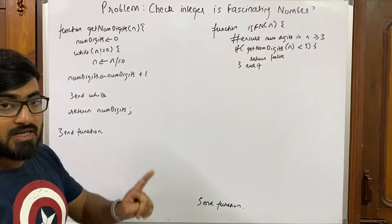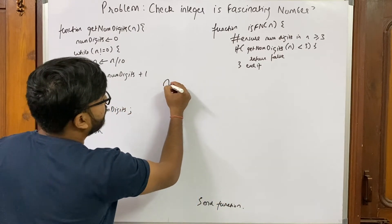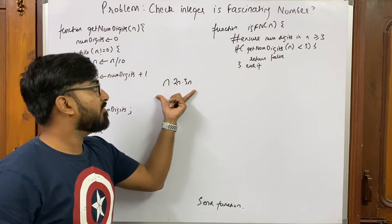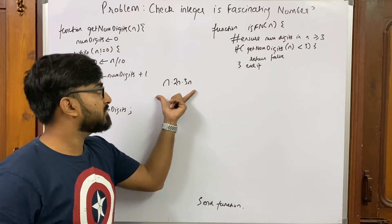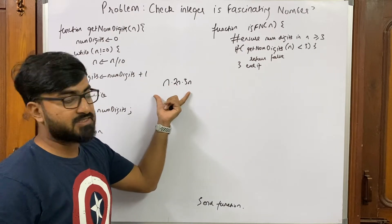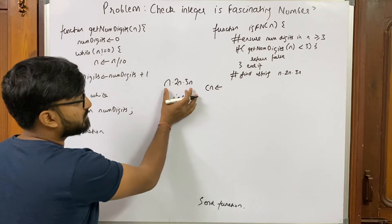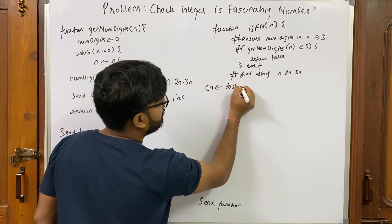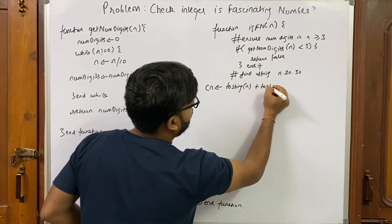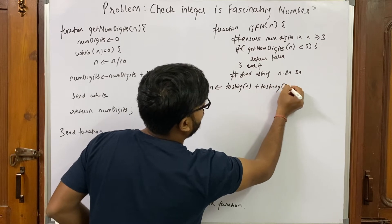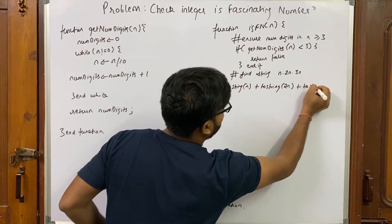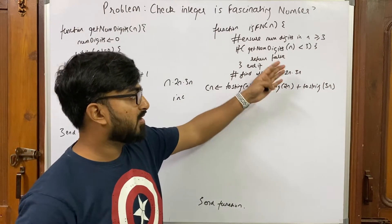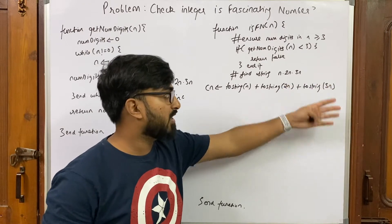Next, we find the concatenation of n, 2n, and 3n. I'll use strings to concatenate them because that's easier. I'll take a variable cn, which is a string storing: convert n to string + convert 2n to string + convert 3n to string. Finding 2n is simple — multiply n by 2; finding 3n — multiply n by 3.